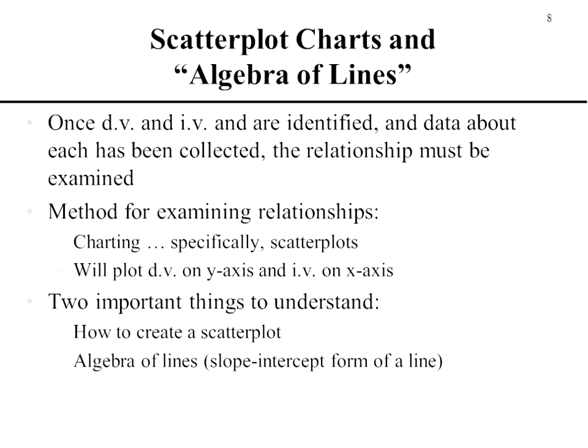Once you identify your dependent and independent variable and collect data representing them, it's time to examine the relationship. The way we examine relationships between pieces of data is by developing a chart using a scatterplot tool. We're always going to plot the dependent variable on the y-axis — that's our main thing going up and down in the vertical direction. And for simple linear regression, the independent variable is plotted on the x-axis.